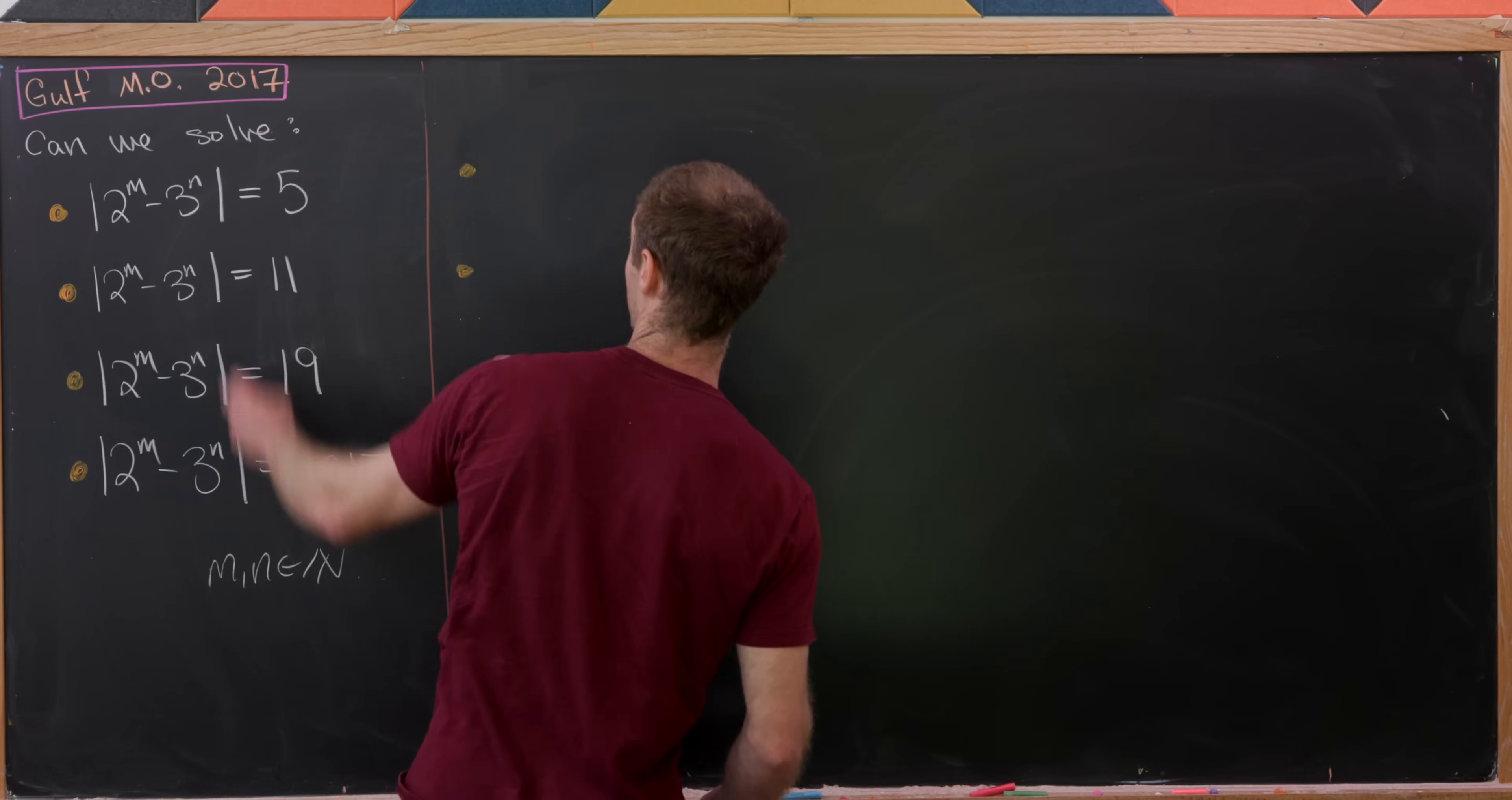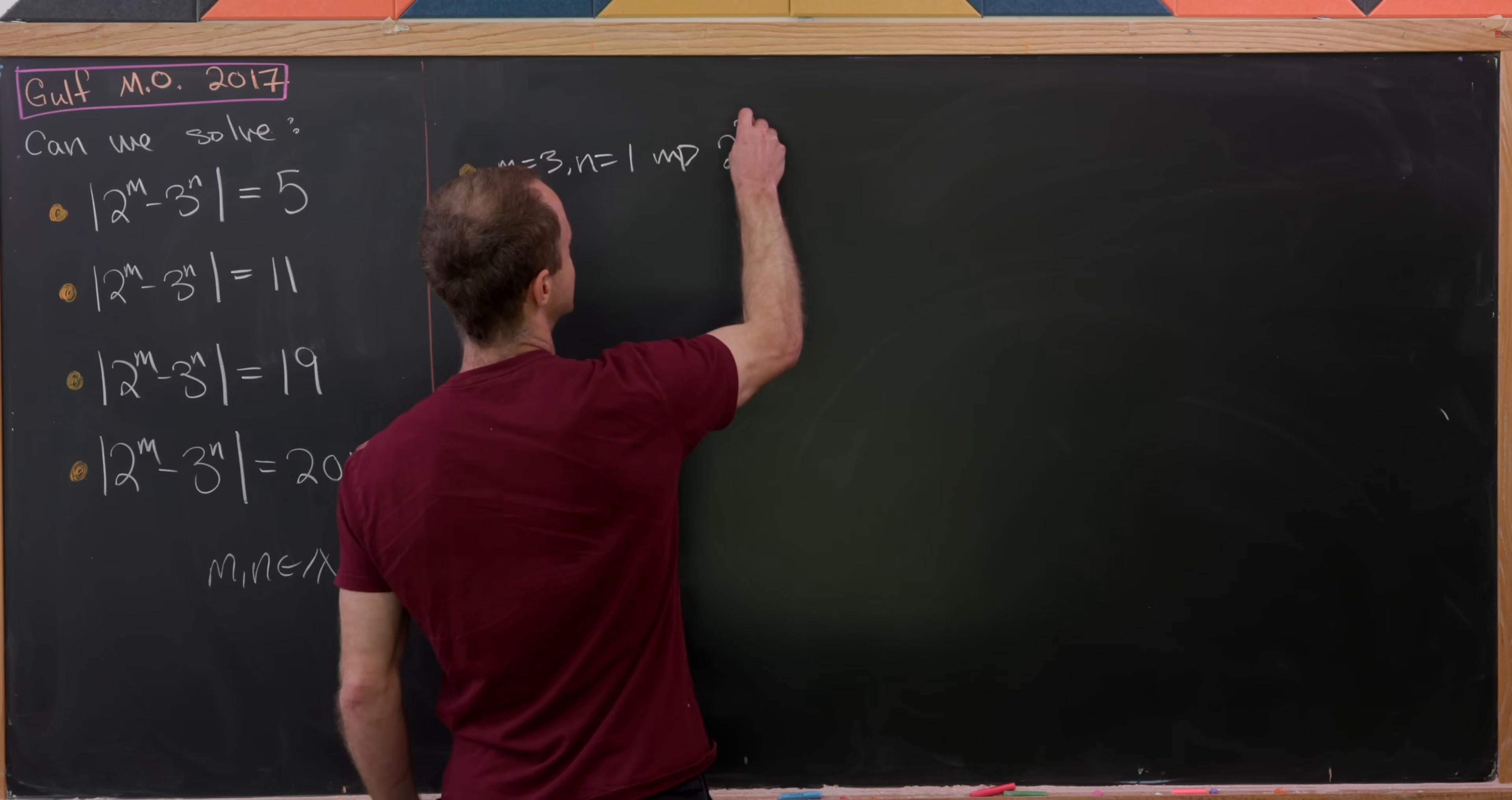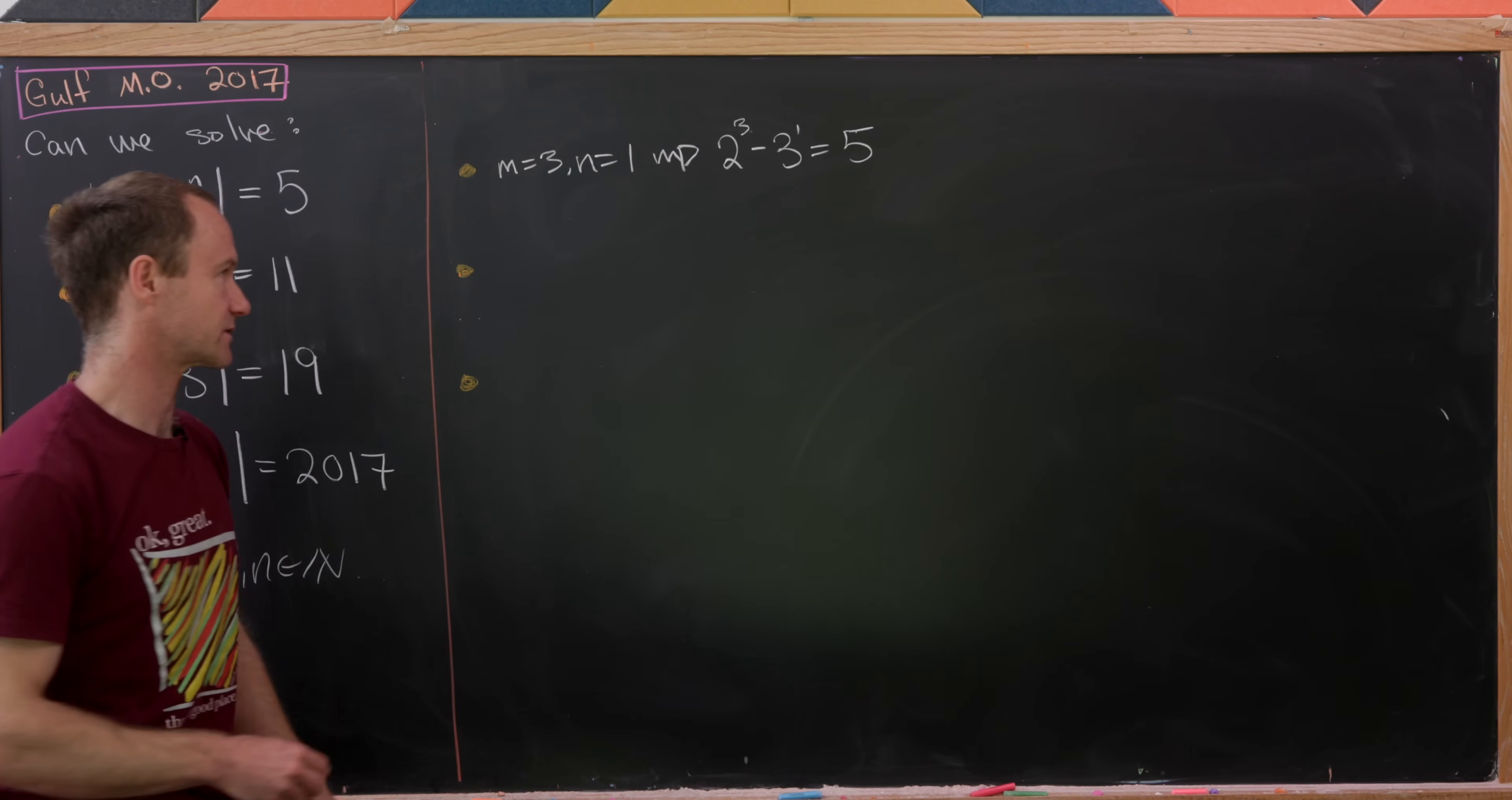Maybe this first one is fairly easy. Notice if we take m equal to 3 and n equal to 1, well pretty clearly 2 cubed minus 3 to the 1 is most definitely equal to 5 because that's just 8 minus 3.